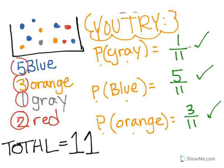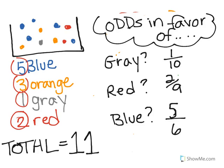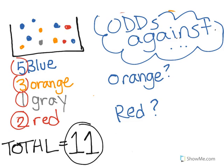Now take a minute and try to find the odds in favor of picking a gray, picking a red, and picking a blue. The answers: odds of picking gray are 1 to 10 — 1 is gray, 10 are not gray. For red, 2 are red and 9 are not red, so 2 to 9. For blue, 5 blue on top and 6 not blue on the bottom, so 5 to 6.